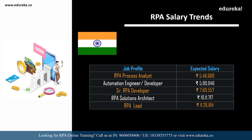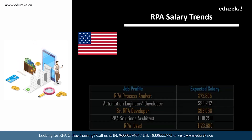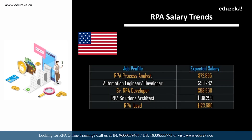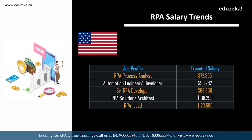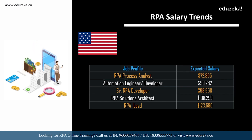Similarly in the USA: an RPA developer can expect around 92,000 dollars; an RPA process analyst around 72,000 dollars; an automation engineer or developer around 90,000 dollars; a senior RPA developer around 98,000 dollars; an RPA solutions architect around 100,000 US dollars; and an RPA lead can expect around 123,000 dollars. That's a huge amount for any career role, so this is the right time to start your career in RPA.